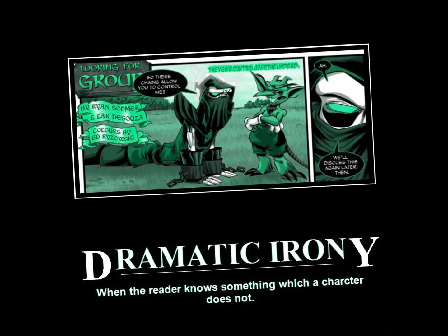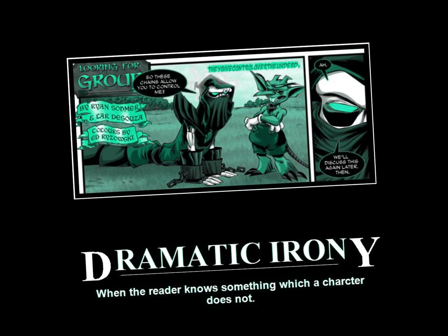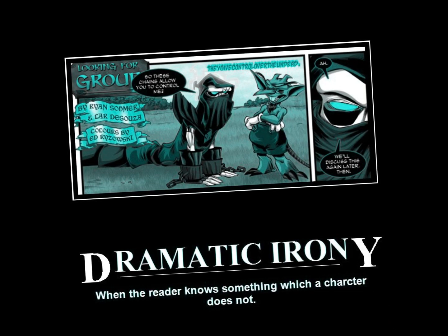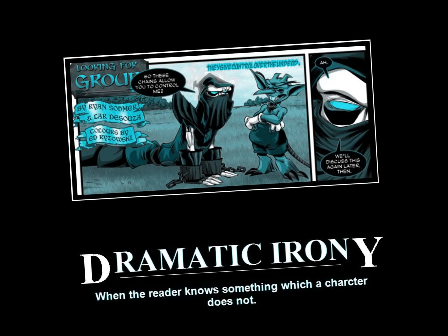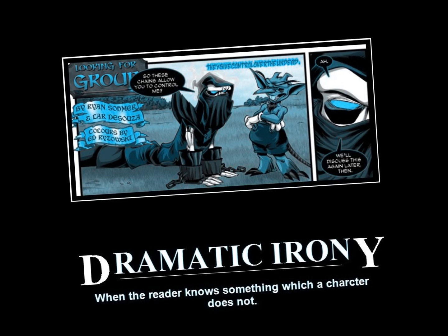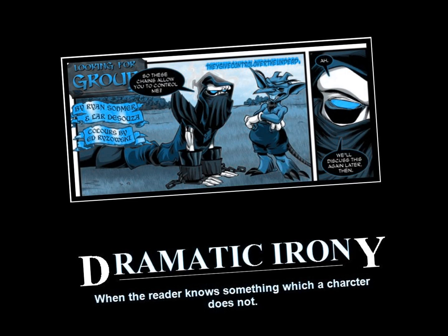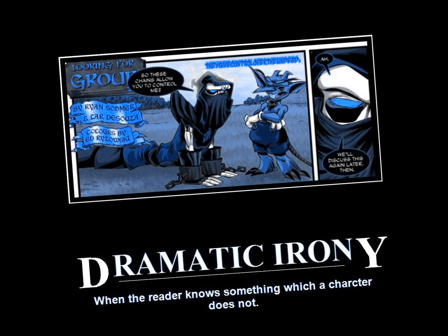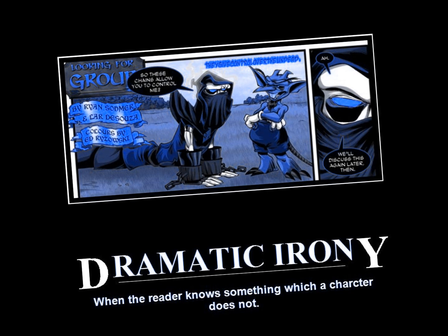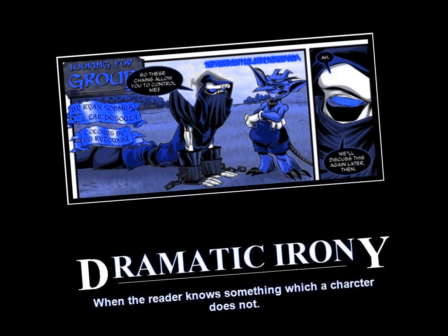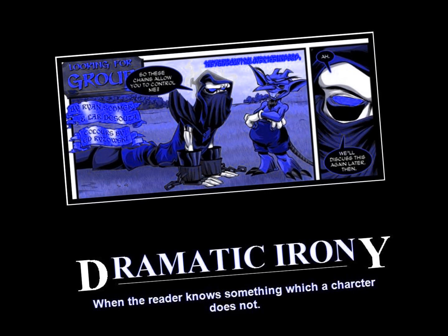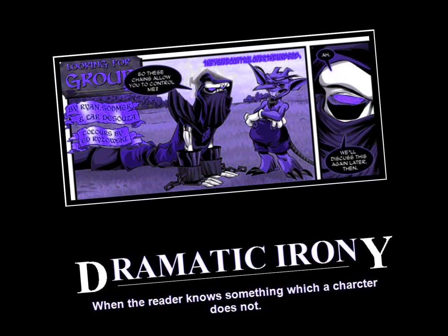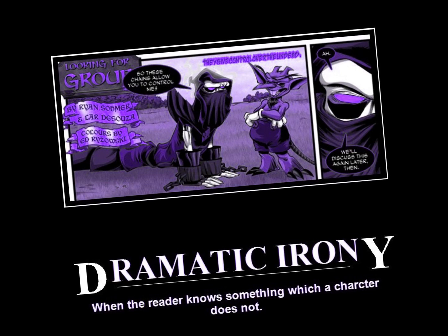Shakespeare used dramatic irony as a dramatic device to make his plays more interesting and to establish genre. For example, in Romeo and Juliet, the audience know that Juliet isn't really dead when Romeo returns to Verona, but Romeo does not know this. In Othello, the audience know that Desdemona hasn't been unfaithful, whereas Othello himself does not. In both Shakespeare examples, dramatic irony is used to add tension and drama to the plot.